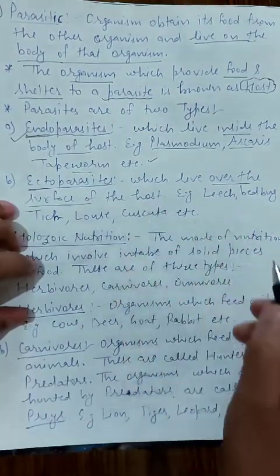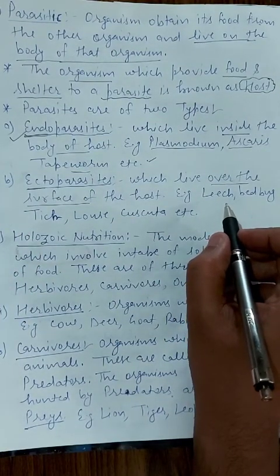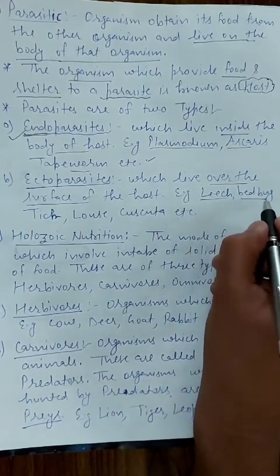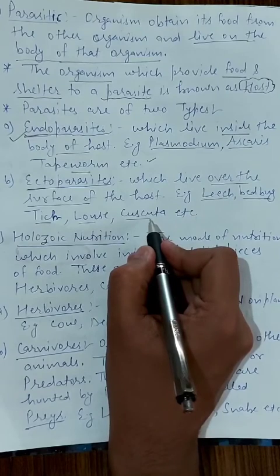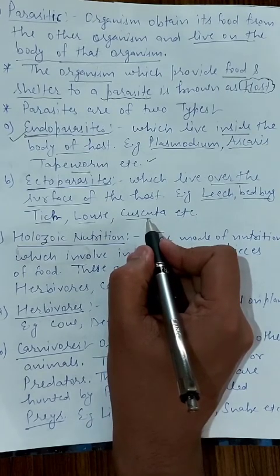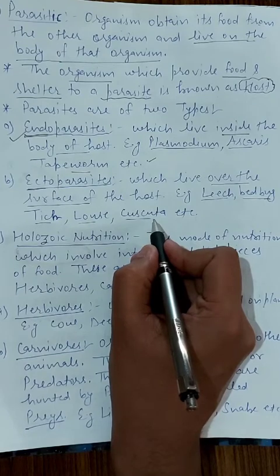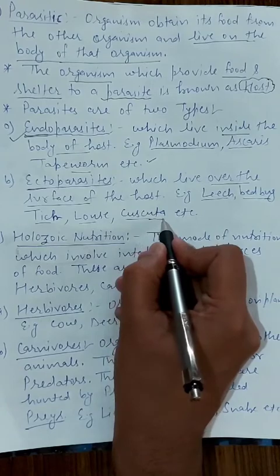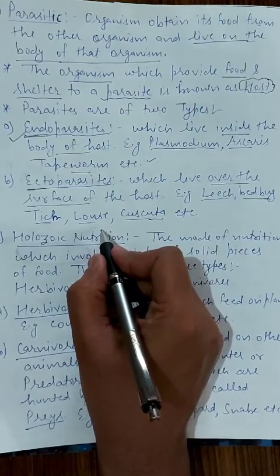Ectoparasites can be of two types: temporary and permanent. Temporary parasites visit the host's body to derive food occasionally, while permanent ones are continuously present on the host. Examples are leech, bed bugs, ticks, and louse. Cuscuta is a plant parasite — a partial parasite which lacks chlorophyll but has xylem and phloem, so it can absorb water and minerals from the soil.